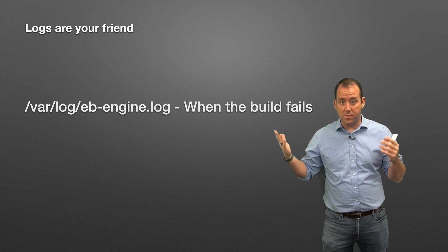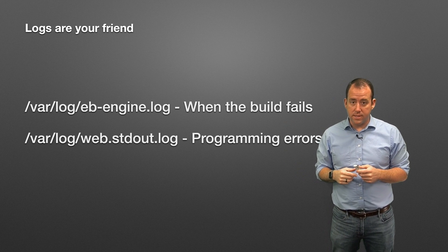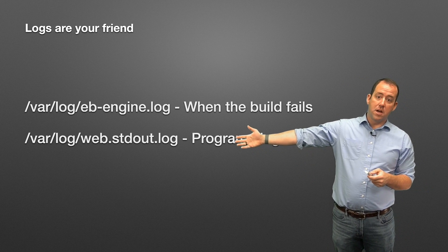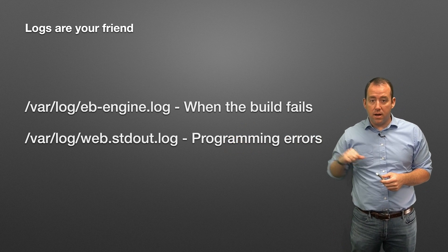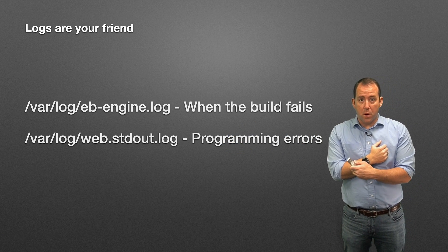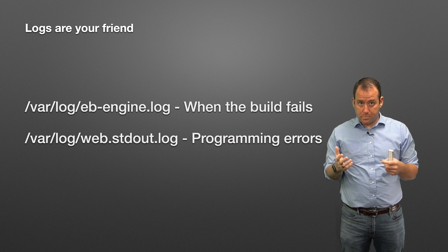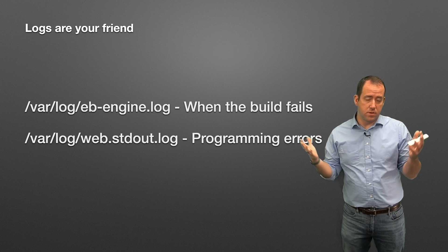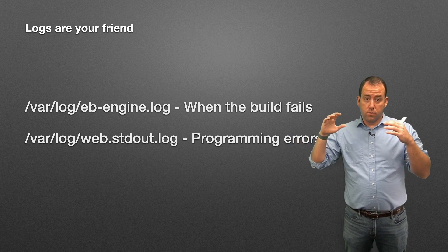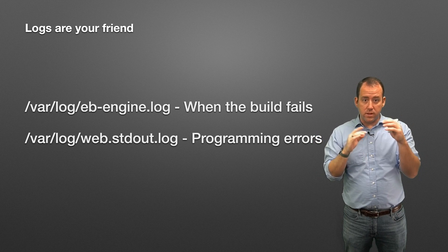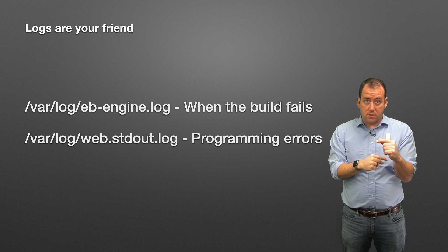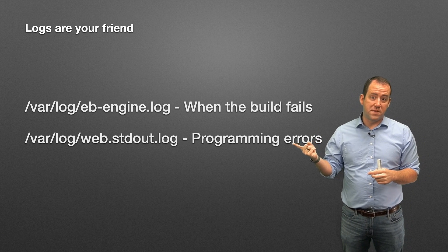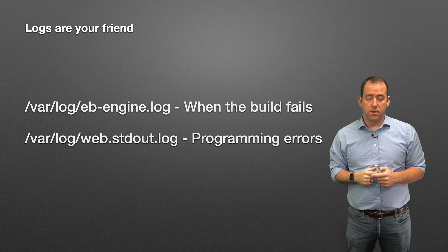/var/log/web.stdout.log is where you'll see programming errors — that's the console equivalent for your application. If you're running Node.js locally and see error messages in the terminal, those same errors show up in /var/log/web.stdout.log when running in Elastic Beanstalk.